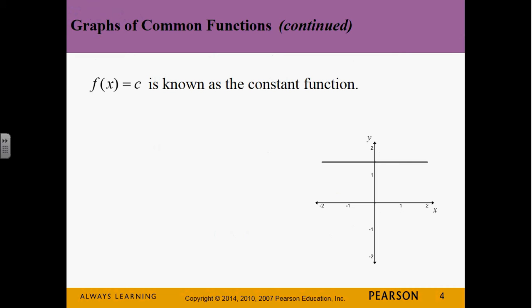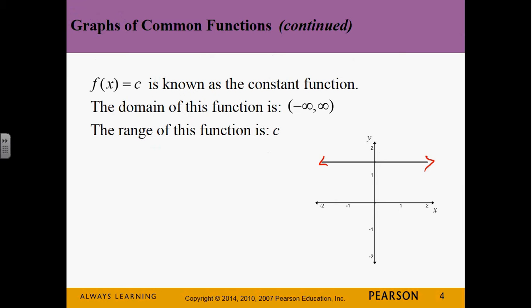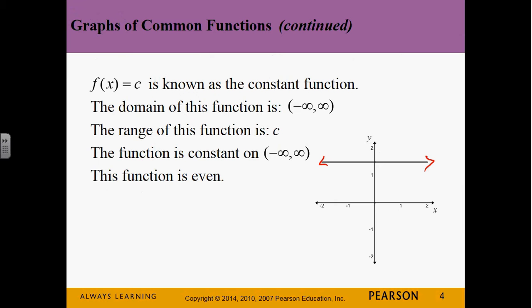Starting with the constant function — a horizontal line. Any horizontal line is just a constant function. We can move it up and down by adding something to it. The domain is negative infinity to positive infinity. The range is just the value c — it has no other value on the y-axis. It's not increasing or decreasing, and it's an even function because it has y-axis symmetry.